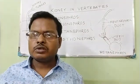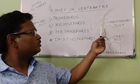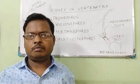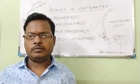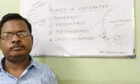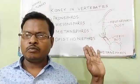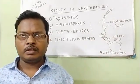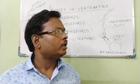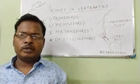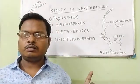What happens to the remaining portion of the Mesonephros duct? In mammals, the Mesonephros duct is retained but modified — it is now used for transporting gametes. This duct, modified in Metanephros, is termed the Wolffian duct in males. In females, this duct is modified into a different duct called the Müllerian duct.